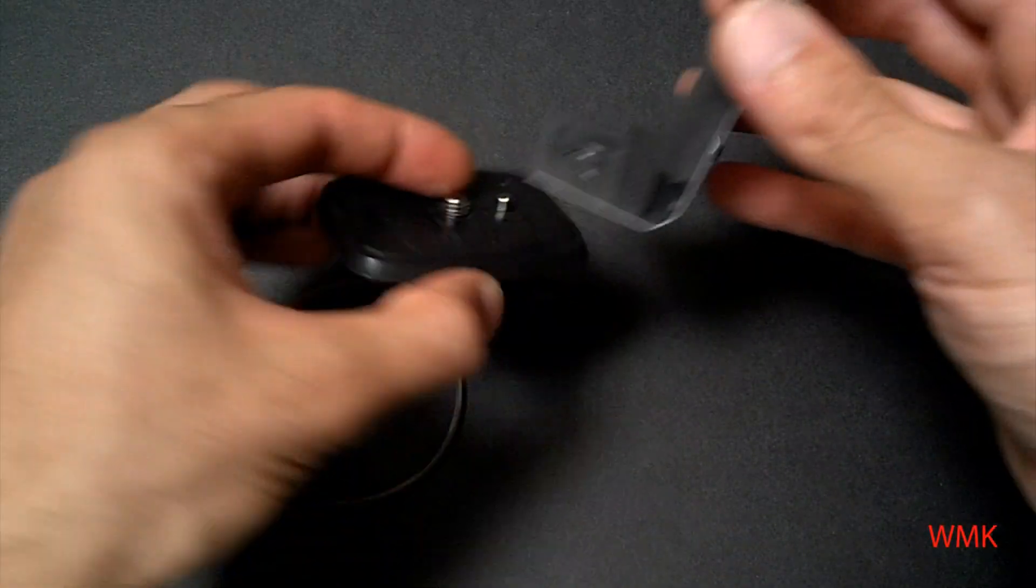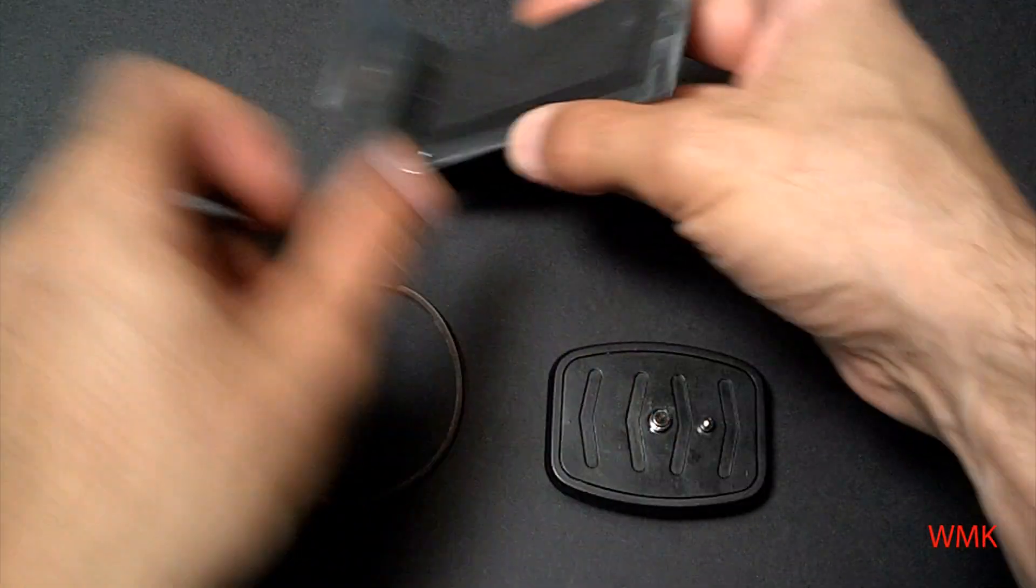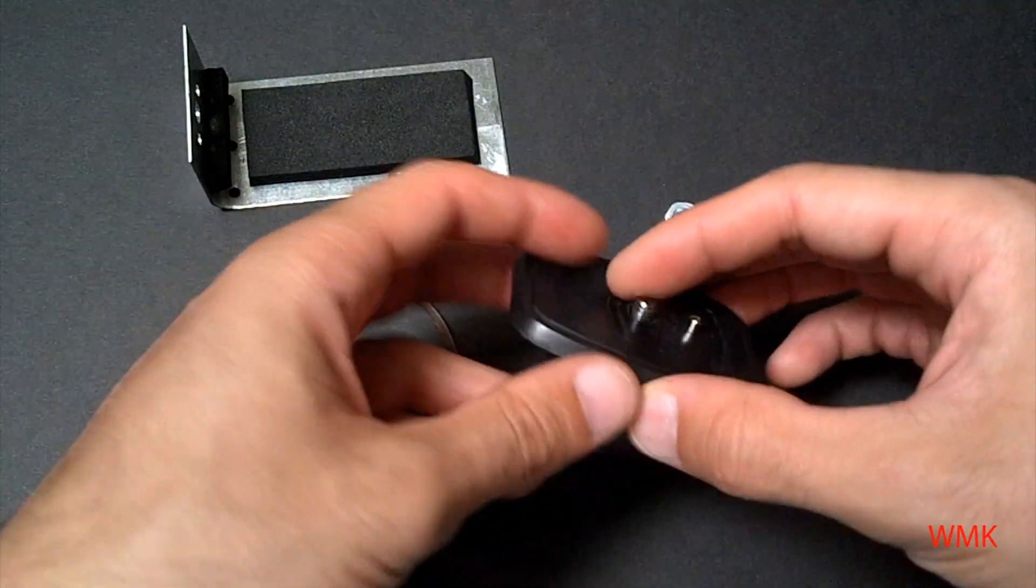And it has to be really skinny by the way, because you're going to be mounting this onto this. You want to have a lot of room. Then you're going to need a quarter by 20 nut because almost every tripod has a quarter by 20 threads on it.